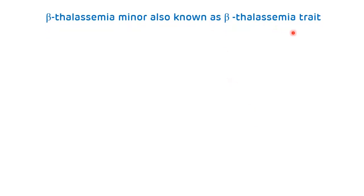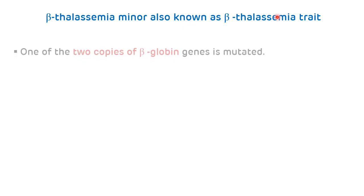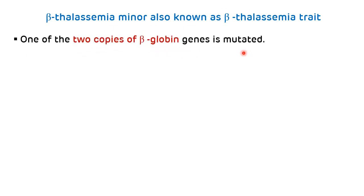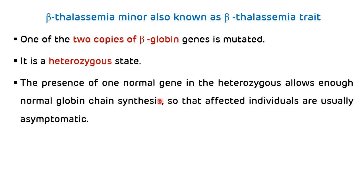Beta thalassemia minor, also known as beta thalassemia trait, is a heterozygous state where one of the two copies of the beta globin gene is mutated. The presence of one normal gene allows normal globin chain synthesis, so most affected individuals are asymptomatic or will have only mild anemia.